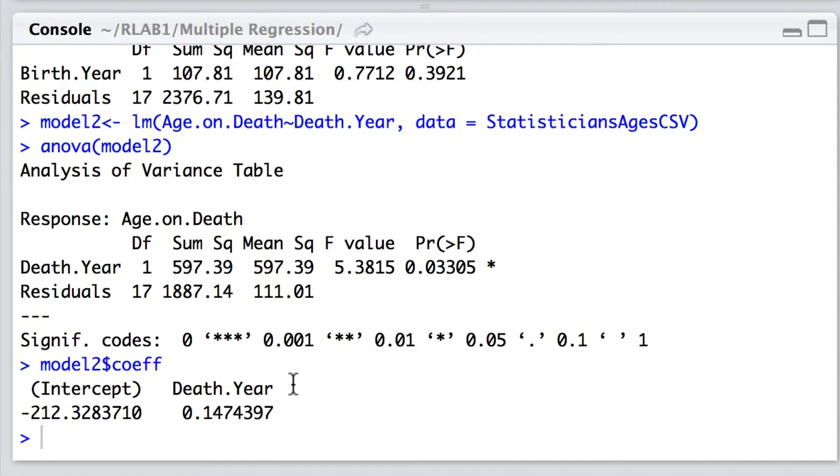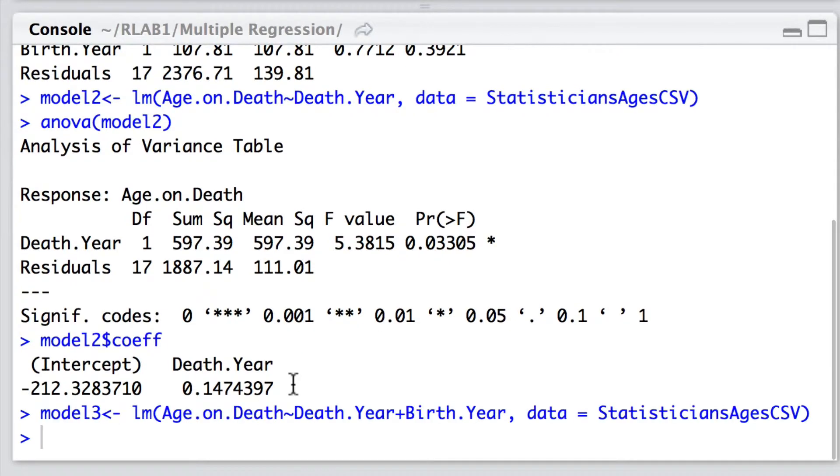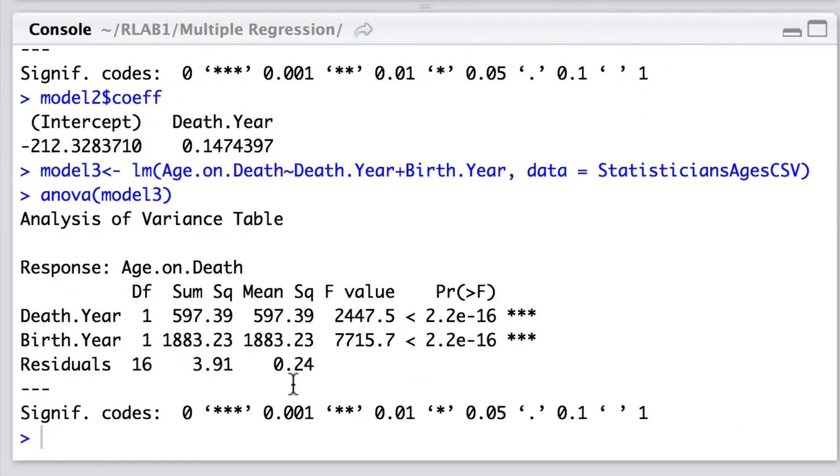Now let's just go a step or two further. Let's have a look at the fit of a proper multiple regression model in which we fit both predictors, both death year and birth year and see their combined role on the age of death. And here is the fit of the model and here is the analysis of variance table.